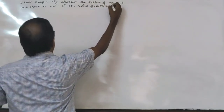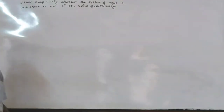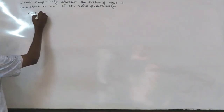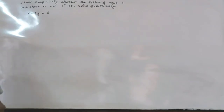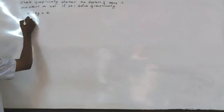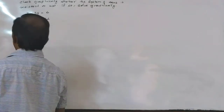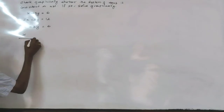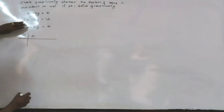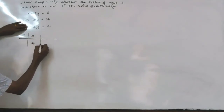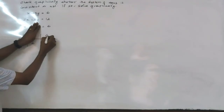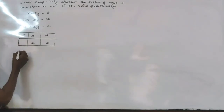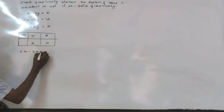We have to find a solution from the graph. The first equation is x plus y is equal to 6, and the second equation is 2x minus 3y is equal to 2. Let us draw the graph of these two functions. For the first equation x plus y is equal to 6: if x is equal to 0, then y is equal to 6, and if y is equal to 0, then x is equal to 6.